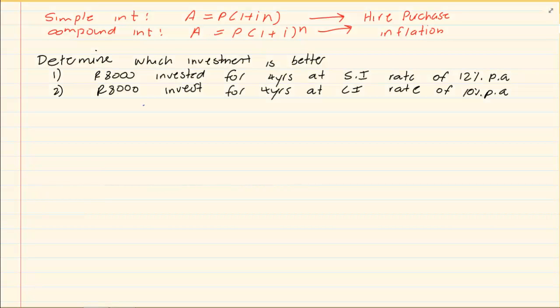8000 Rand invested for four years at a simple interest rate of 12% per annum, or 8000 Rand invested for four years at a compound interest rate of 10% per annum. When you are doing simple interest or compound interest the first thing you need to do is write down your P. We know our P is 8000, we don't know A. If we are doing the first one then we know that our interest is 12% and our N is 4 years.